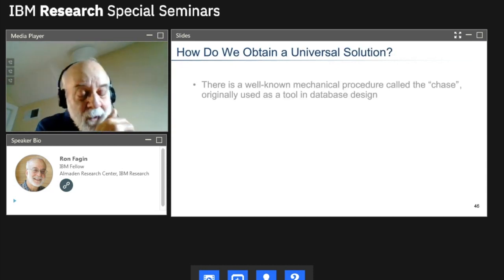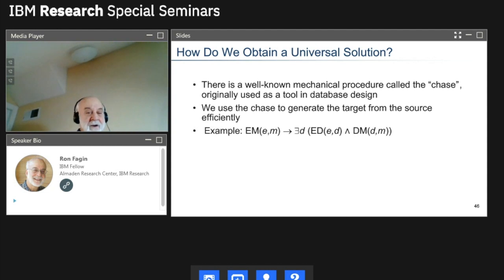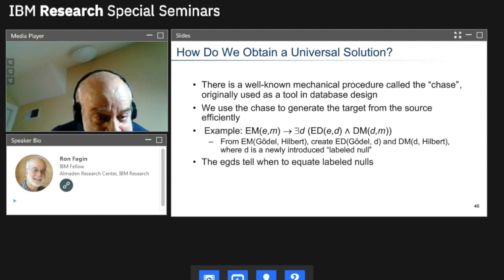Okay, now how do we obtain a universal solution? Well, there's this well-known method called the chase. It's been used for many, many years in database design and used in normalization theory and other places. And so we're going to use the chase to create the universal solution. So how does it work? So let's go back to our TGD, Tuple Generating Dependency, that says employee E and manager M are in the employee-manager relationship. There's some department D where employee E is in department D and D is managed by M. So what we do now is we take each tuple in that first relation, like Gödel-Hilbert, and now we create this new value D, this so-called labeled null, and say Gödel's in department D and D is managed by Hilbert. And these are called labeled nulls. So that's what we do. And then if there happens to be an EGD like each manager manages at most one department, you would equate some of these labeled nulls.